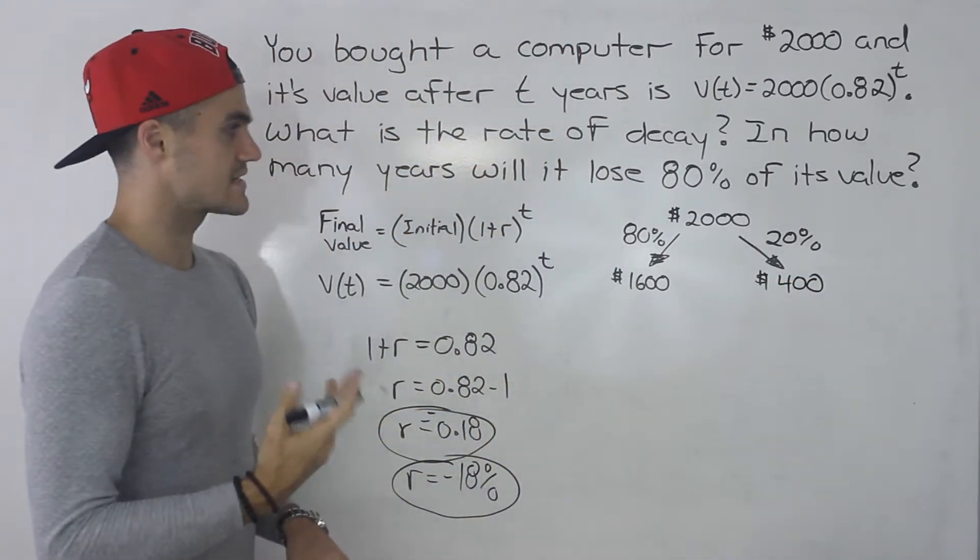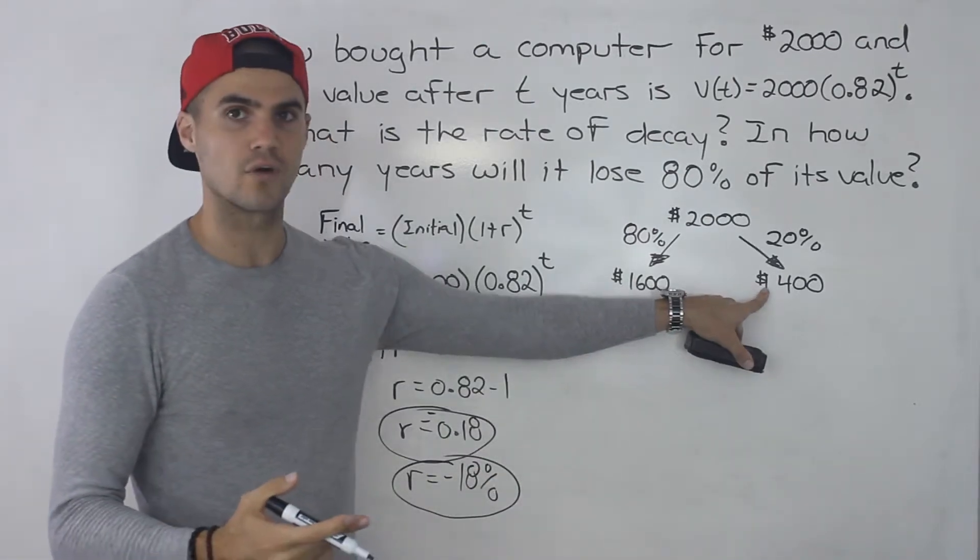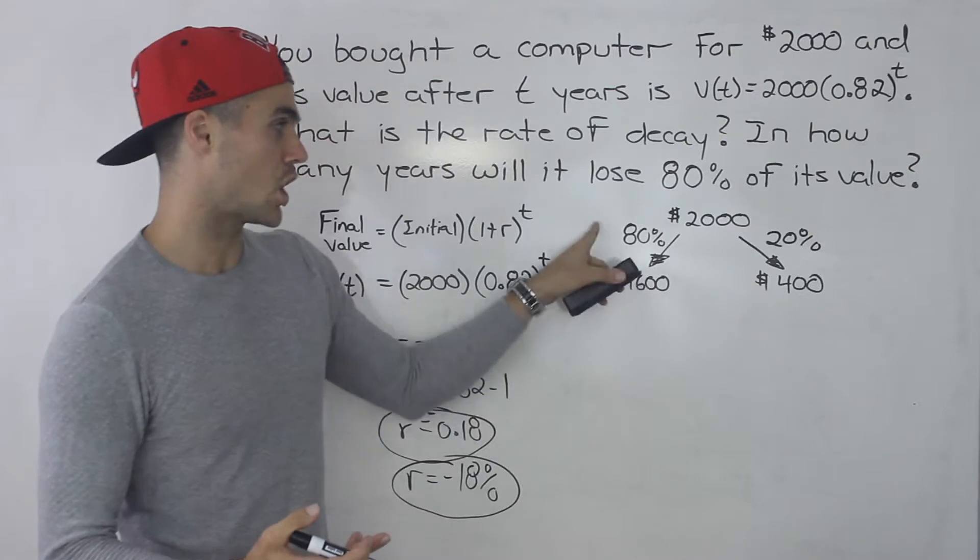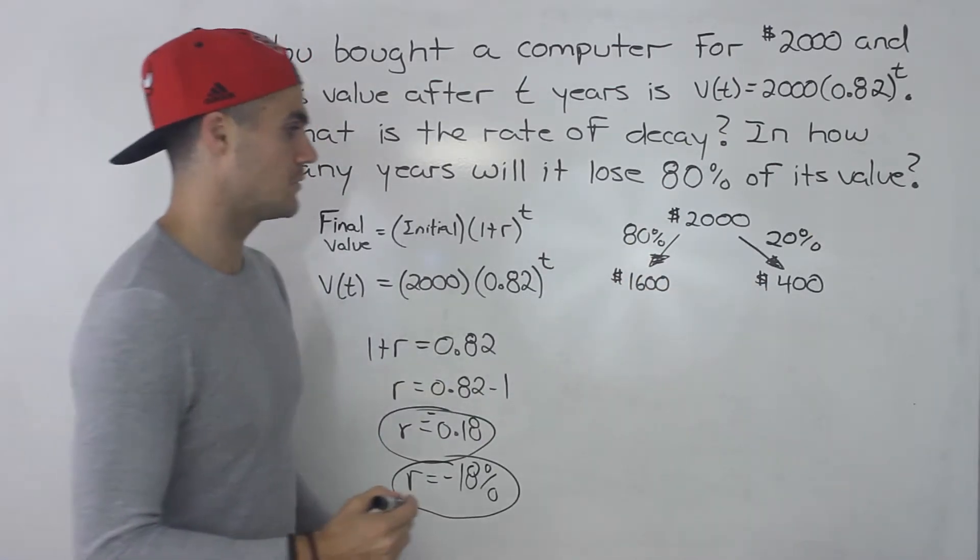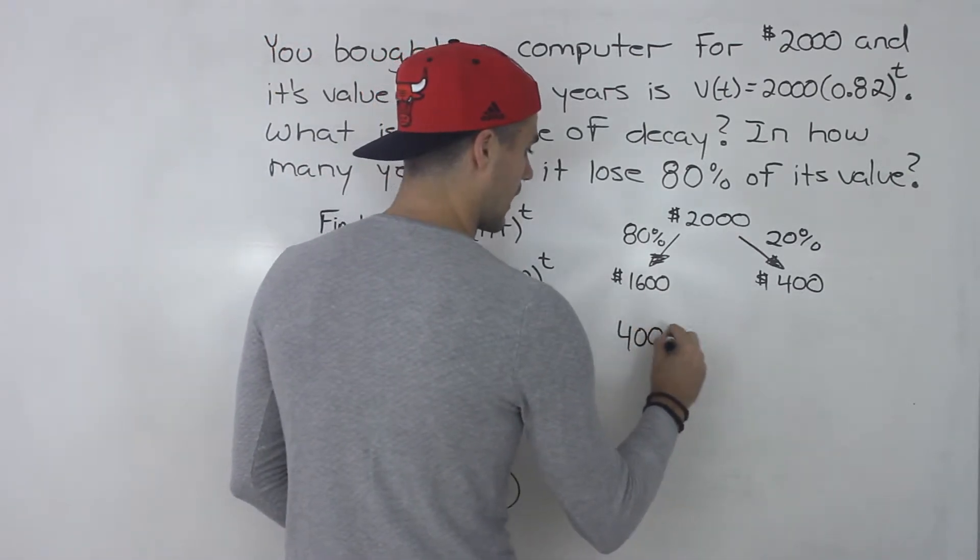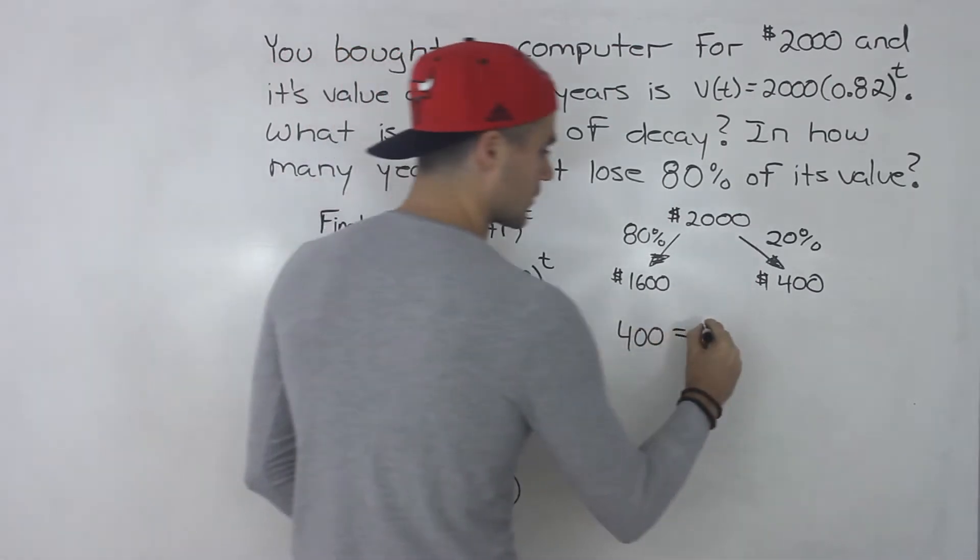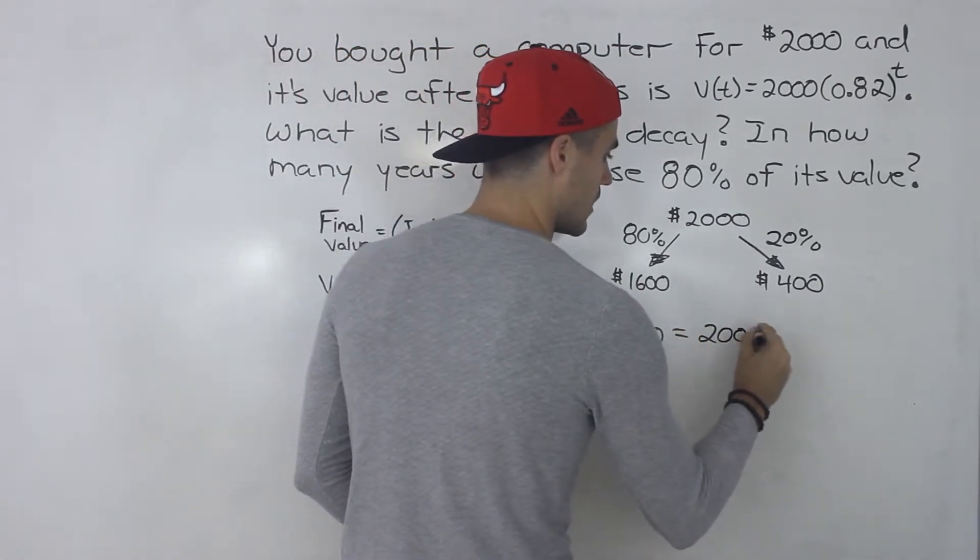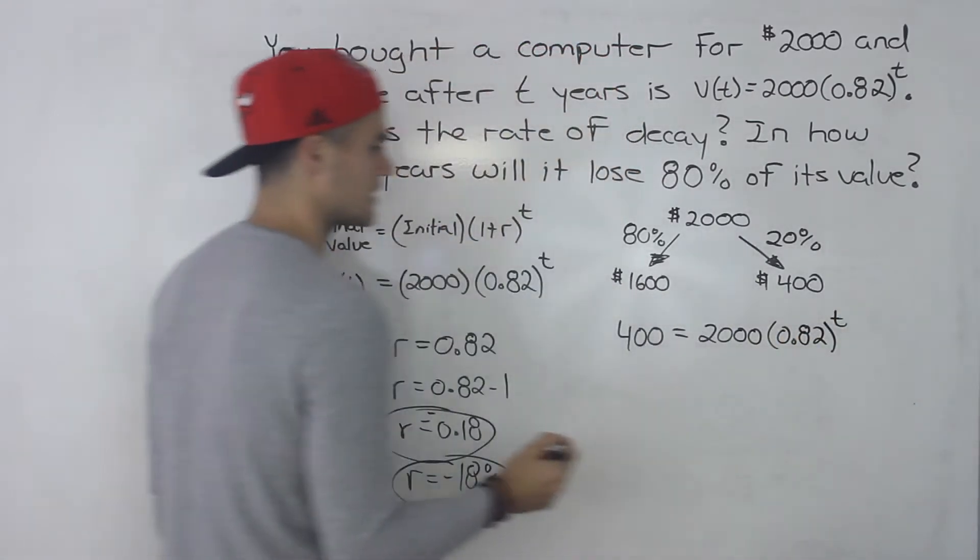So basically the second part of the question is asking when will the computer be valued at $400, because it lost 80% of its value. So only 20% is remaining. The way we do that is we just take 400 and we make it equal to this part of the equation. So 2,000 times 0.82 to the power of t.